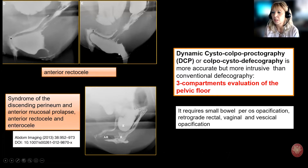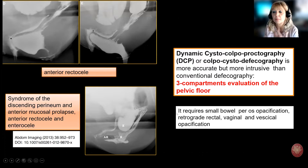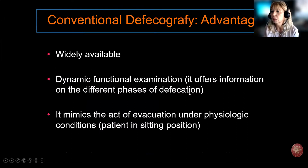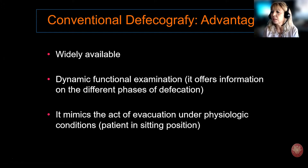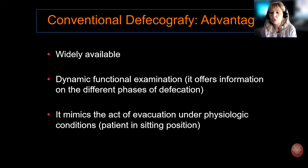This is a quite complex technique. The basic technique requires just opacification of the rectum, whereas colpocystodefecography requires opacification of the vagina, bladder, and small bowel. It is definitely more accurate and more comprehensive, although quite intrusive. Conventional defecography has several advantages: it's widely available, and it's a real functional examination offering information during defecation. It truly mimics the act of evacuation in physiological conditions in the sitting position.